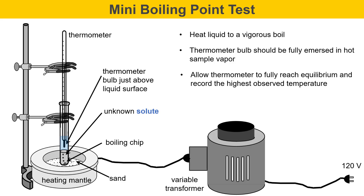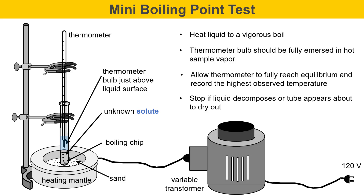Record the highest observed temperature as the boiling point. You should stop the test if you notice the liquid decomposing — that would be it turning black, giving off smoke, popping, or any similar signs — or if the sample appears about to dry out, since vigorous boiling may cause vapor to escape the test tube.